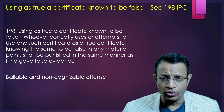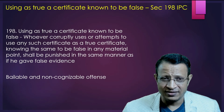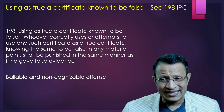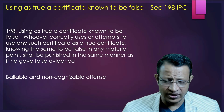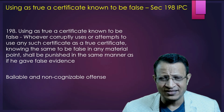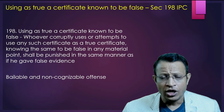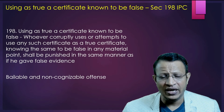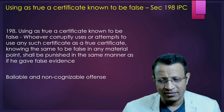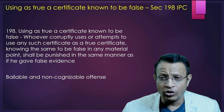Section 198 IPC talks about using a true certificate known to be false. Whoever corruptly uses or attempts to use any such certificate as a true certificate, knowing the same to be false in any material point, shall be punished in the same manner as for giving false evidence. It is a bailable and non-cognizable offence, my dear friends. In both the above sections, punishment relates to false evidence, as dictated under Section 193 of IPC — punishment for false evidence means whoever intentionally gives false evidence in any stage of a judicial proceeding, or fabricates false evidence for the purpose of being used in any stage of a judicial proceeding, shall be punished with imprisonment for a term which may extend.